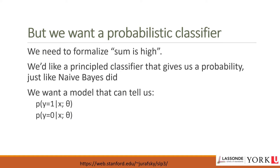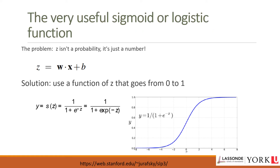Nothing in this equation forces z to be a legal probability — that is, to lie between 0 and 1. Since weights are real-valued, z can range from minus infinity to infinity. To solve this problem, we need a function of z that maps to the range [0, 1]. We use the logistic function, also called the sigmoid function because of its S-shape.